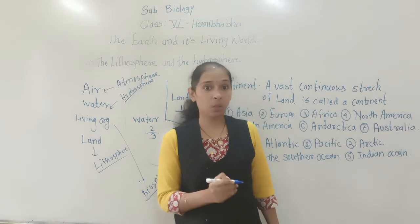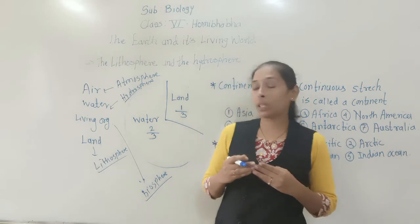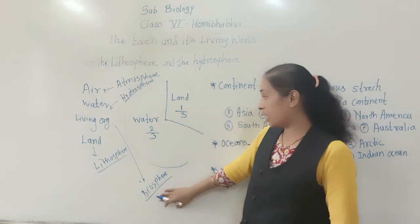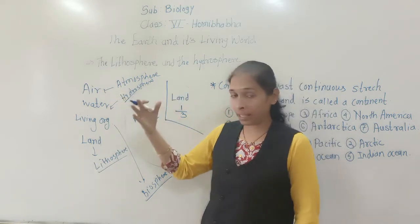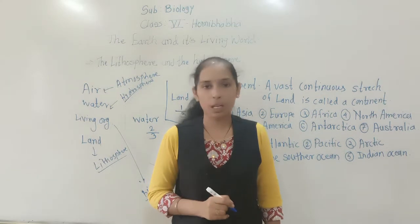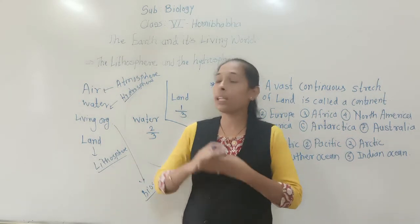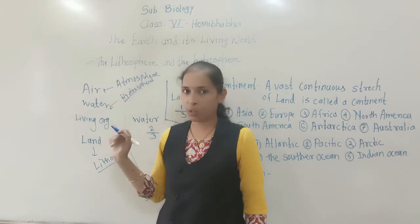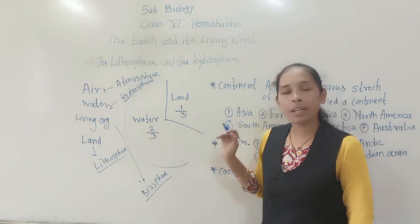As we discussed in the first lecture, 'bio' means life, so living organisms are called the biosphere. These living organisms can be present in the air, in the water, and on the land. So the biosphere is spread across the atmosphere, hydrosphere, and lithosphere.